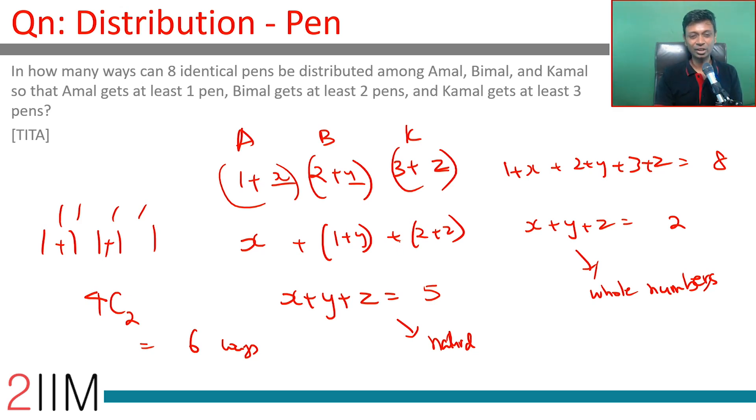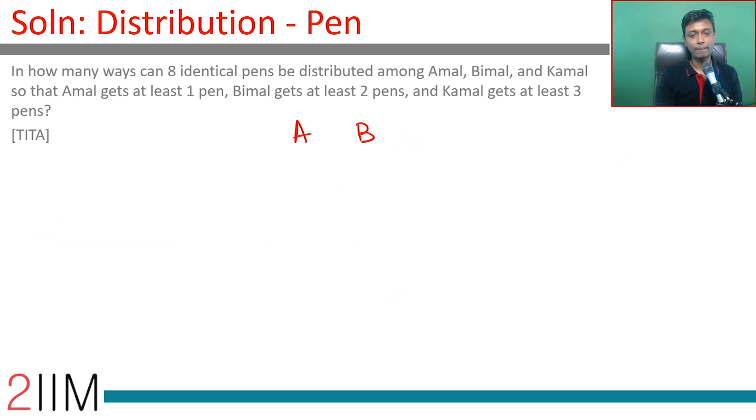We can even list down and find. We have a, b, k. Give him 1. Let's give Bimal 2. 1 plus 2 is 3. We need to have total of 8. Amal being 1, this could be 3, this could be 4. Amal being 1, this could be 4, this could be 3.